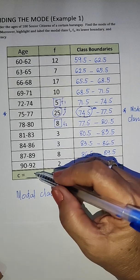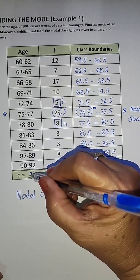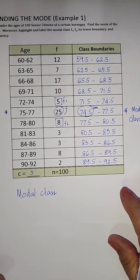But first, we also need to get our class size. So 90 minus 87, our class size is equal to 3.